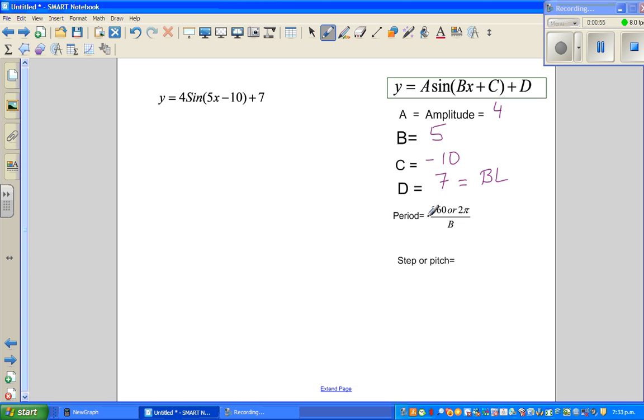Now period is 360 or 2 pi divided by b. Now we are going to do this in degrees, so I will ignore this 2 pi. So this is 360 divided by 5.